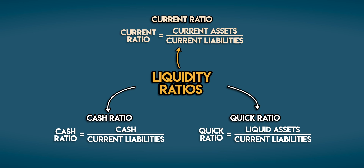So there are three liquidity ratios you should know. The current ratio is the least conservative — it weighs a business's current assets against its short-term debt obligations. The quick ratio is more conservative because it only takes liquid assets into account. And the cash ratio is the most conservative, only considering cash and cash equivalents.